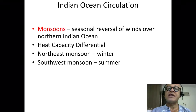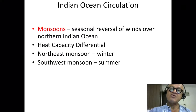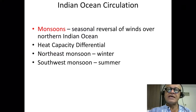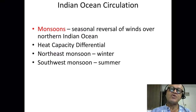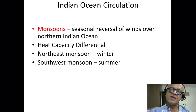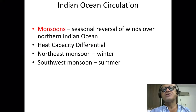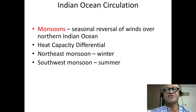When they wanted to trade, they could go eastward using the southwesterly winds during the monsoon season, and they would come back during the northeasterly monsoon when the winds were going from east to west. So the monsoon seasonally reverses over the northern Indian Ocean.